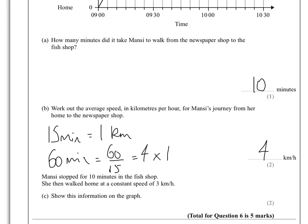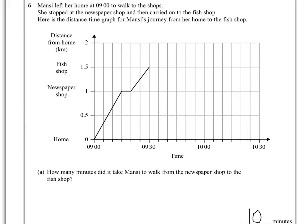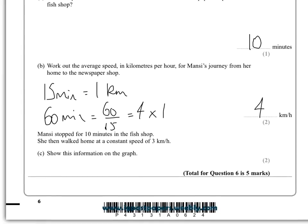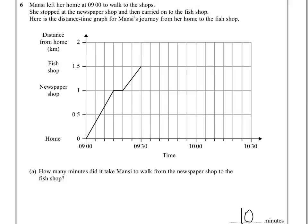It tells us that Mansi stopped for 10 minutes in the fish and chip shop. She walked home at a constant speed of 3 kilometres per hour, and it wants us to show this on the graph. So she stops for 10 minutes — that's two blocks — so that's her stopping.